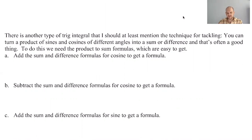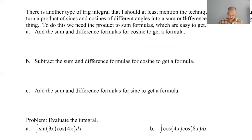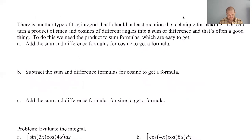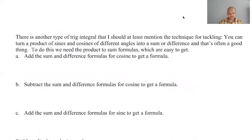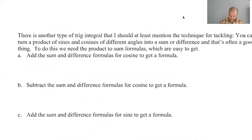Now what we're going to do is look at something slightly different. We want to deal with what happens if you have different arguments, 3x and 4x or like 4x and 8x. So we need a way to deal with that. Turns out that the 14 formulas that you learn in pre-calc or math analysis help you out a lot. So here's what we're going to do. Add the sum and difference formulas for cosine to get a formula.